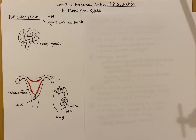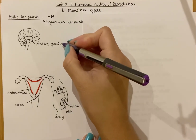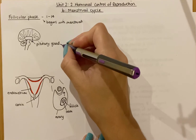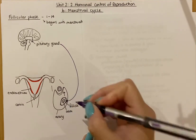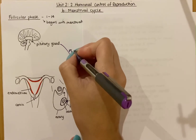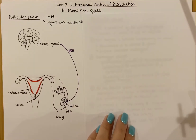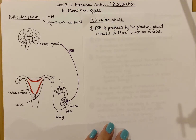FSH is the first hormone produced and it is produced by the pituitary gland. FSH will travel in the blood from the pituitary gland and will target the follicle that surrounds the developing ovum. FSH — follicle stimulating hormone — is produced by the pituitary gland and travels in the blood to act on the ovaries, specifically the follicle.